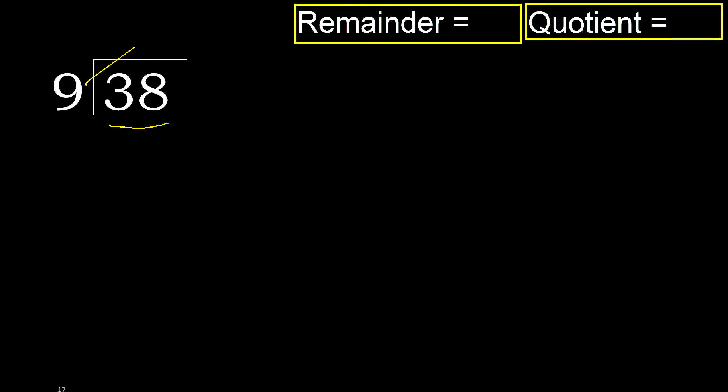9 multiplied by which number is nearest to 38 but not greater? 9 multiplied by 5 is 45 — 45 is greater. So 9 multiplied by 4 is 36.